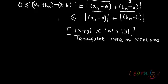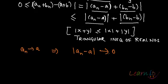So we have reached this point now. Now what do I know about An and Bn? I know about An and Bn that An tends to A, so which is same as saying that mod of An minus A tends to 0.